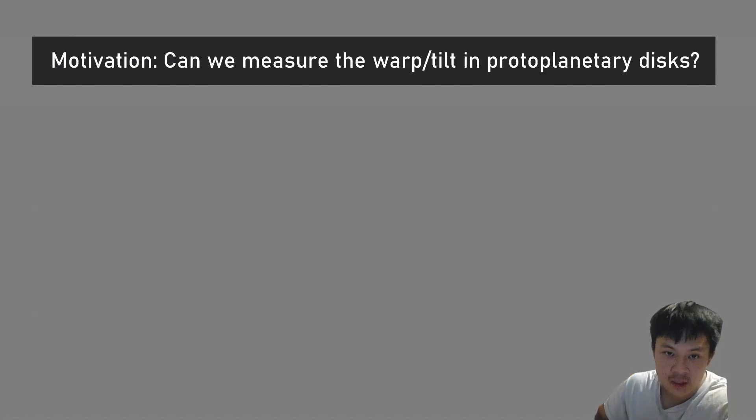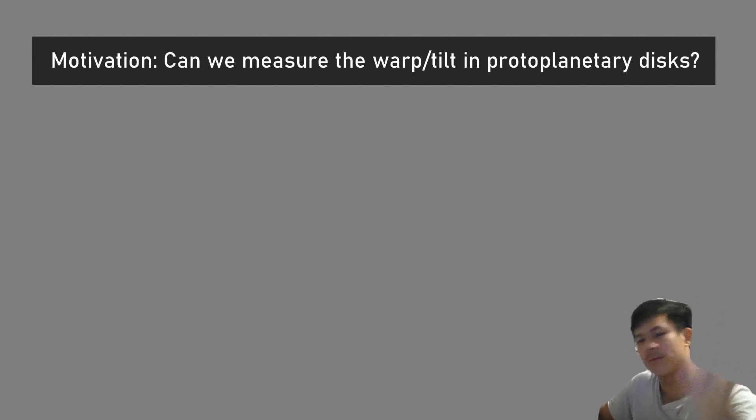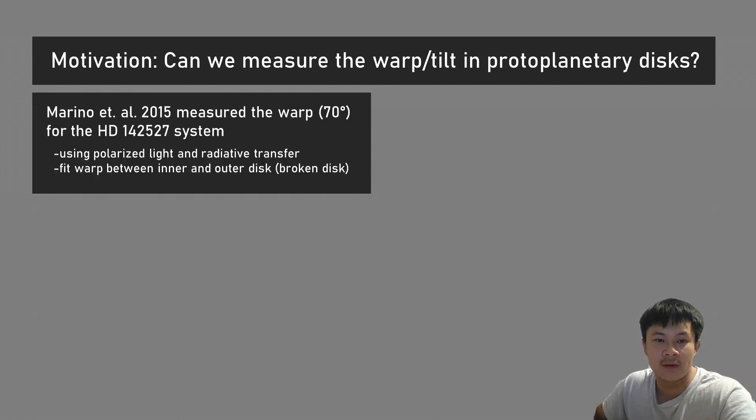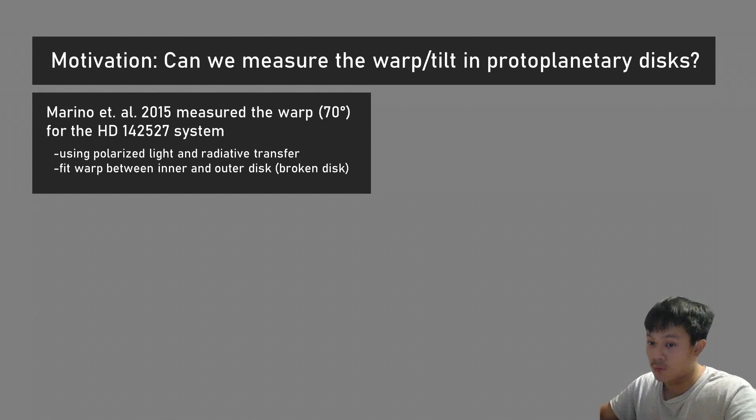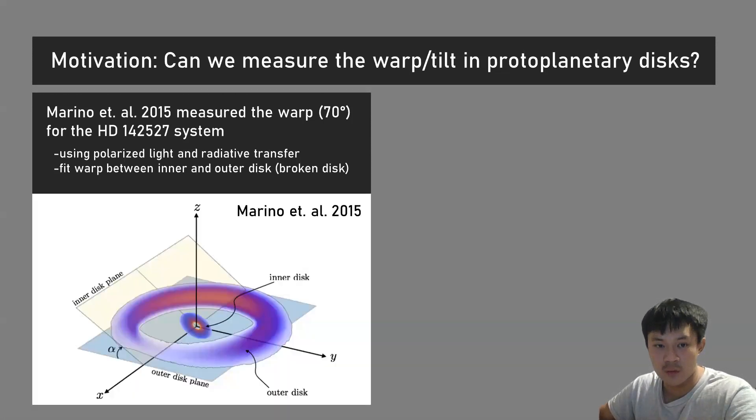The motivation for my work is: can we measure the warp or the tilt in protoplanetary disks? Previously this has been done for broken protoplanetary disks. Moreno et al. measured a fairly large warp in the HD 142527 system between the inner, about 1 AU sized ring, and the outer, about 100 AU sized outer disk. They used polarized light radiative transfer to do these calculations, whereas what we're trying to do is a little bit different.